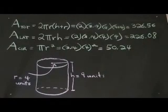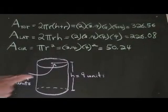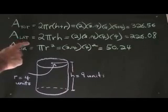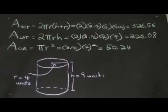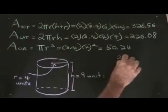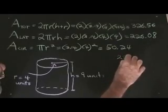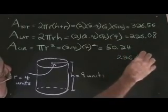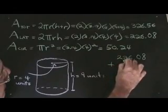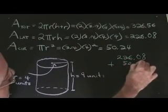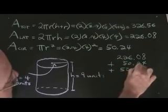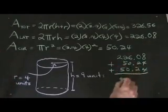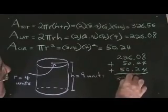To test whether the lateral area plus the area of the two circles really totals the same as the total area, we simply have to add some of these numbers together. The lateral area is 226.08 plus 50.24, one of the areas of the circle, plus the other circle, 50.24, gives us a total of exactly 326.56.